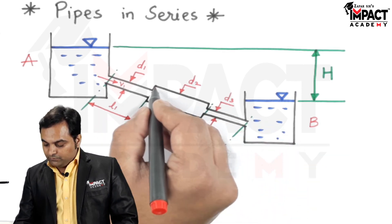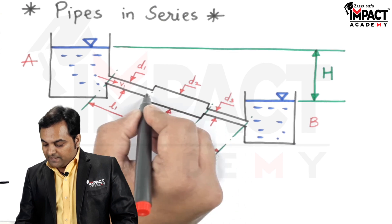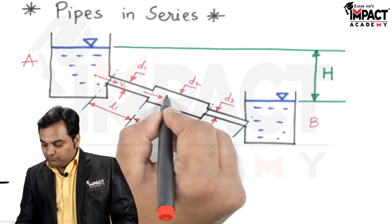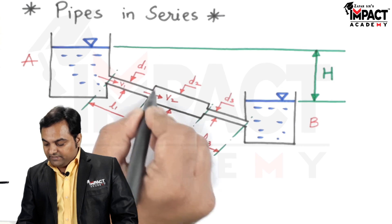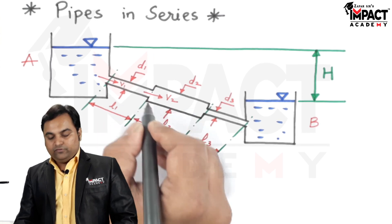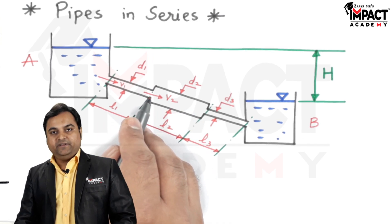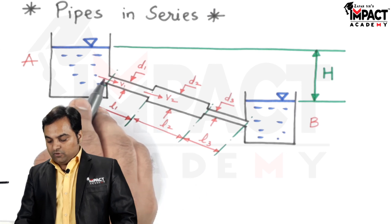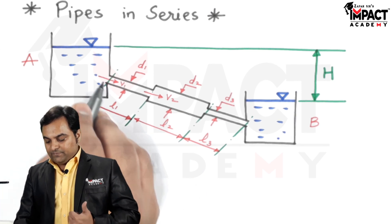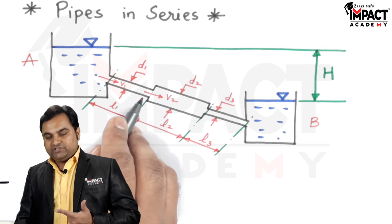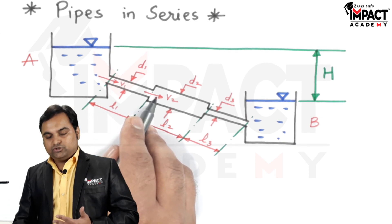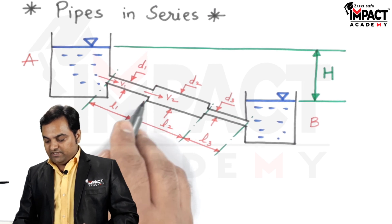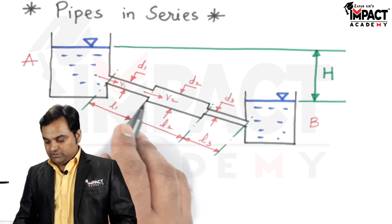After that, the fluid enters pipeline 2 where the velocity is V2. Since there is a sudden expansion, there will be head loss due to sudden expansion, which is again a minor loss. So we have one minor loss due to entry, then a major loss due to friction, and then head loss due to sudden expansion which is another minor loss.